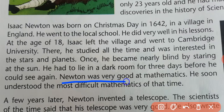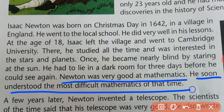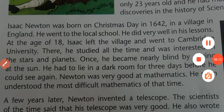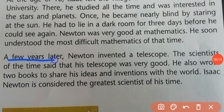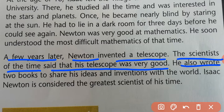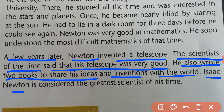Newton was very good at mathematics and soon understood the most difficult mathematics of that time. A few years later, Newton invented a telescope, and the scientists of the time said it was very good. He also wrote two books to share his ideas and inventions with the world. Isaac Newton is considered the greatest scientist of all time.